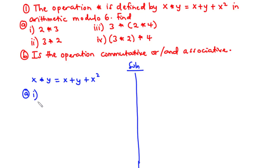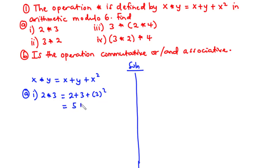For part (a)(i), we solve 2 star 3. Our x is 2 and y is 3. Substituting: 2 plus 3 plus 2 squared. 2 plus 3 is 5, and 2 squared is 4, so 5 plus 4 is 9. Converting to modulo 6: since 9 is greater than 6, we divide 9 by 6, giving 1 remainder 3. So the answer is 3 mod 6.